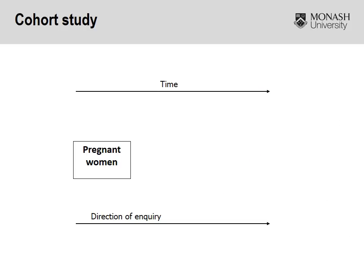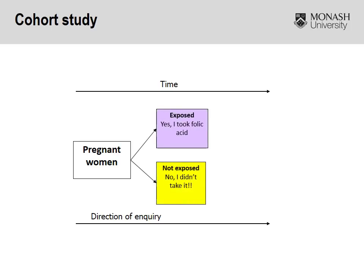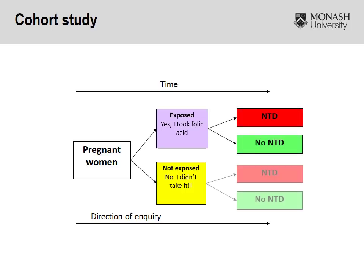A cohort study can be thought of much along the same lines as an RCT, with the key difference being there is no randomization. Patients are already exposed to the risk factor or intervention — in this case, whether or not they took folic acid. The same principles then apply moving forward in terms of outcome assessment and blinding at the outcome assessment stage.